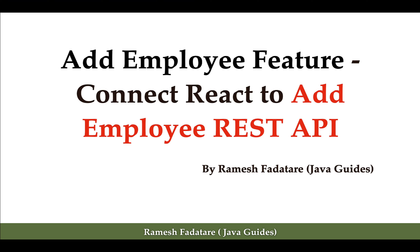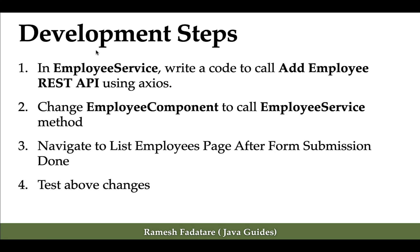Let us take a look at the development steps. In the employee service, we will write the REST client code to call the Add Employee API using Axios. Next, we'll update the employee component to call the employee service method. Then we'll navigate to the list employees page after form submission, and finally we'll test all these changes. Let us head over to employee service and write the REST client code.